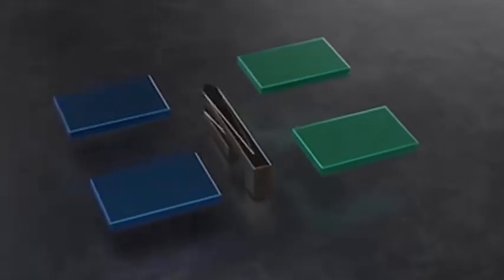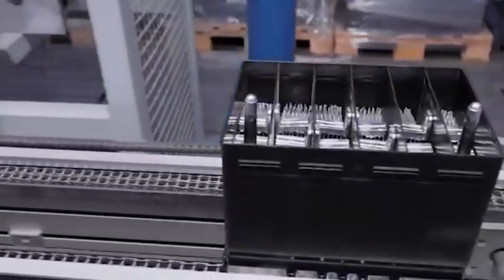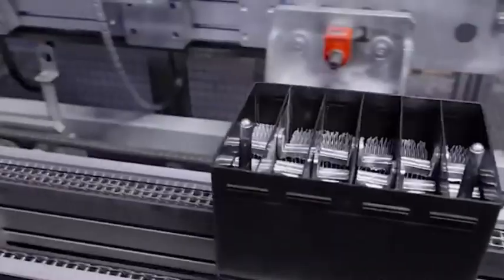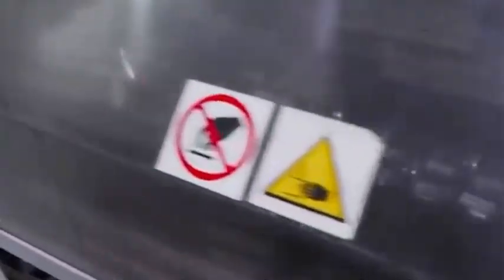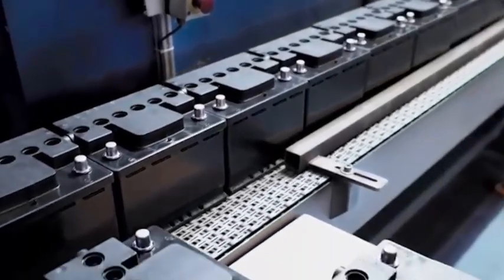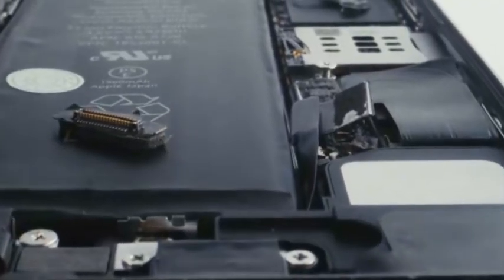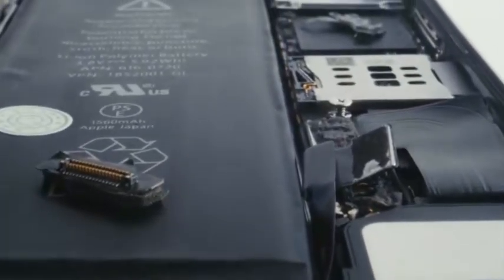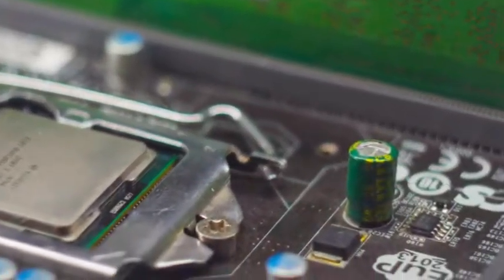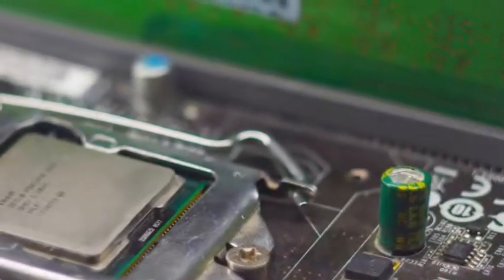In May 2024, German Zeiss suddenly announced that it would export 10 sets of EUV optical lens testing equipment to China. These devices can detect 0.1 nanometer mirror defects, and ASML's EUV lithography machine lenses are made by Zeiss. Industry observers pointed out that this may be a reserve cooperation channel for China's self-developed lithography machines in the future.